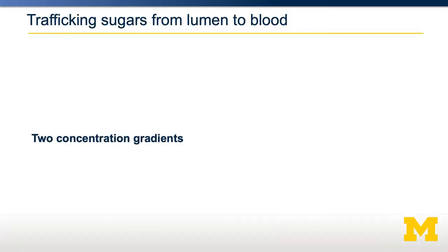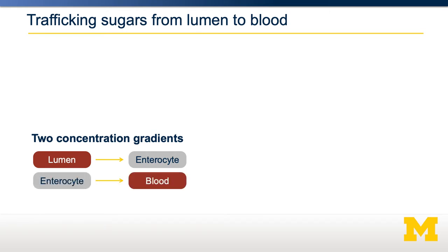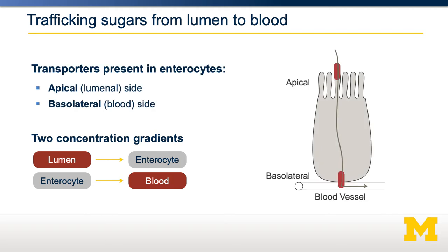Let's talk about what happens after a sugar is digested and is ready to be absorbed. There are actually two concentration gradients we have to consider. One is the gradient between the gastrointestinal lumen and the enterocyte. The second is the gradient between the enterocyte and the blood vessel. Therefore, for a sugar to be transported from the lumen into the blood, it has to pass through two transporters — one on the apical side of the enterocyte and one on the basolateral side.